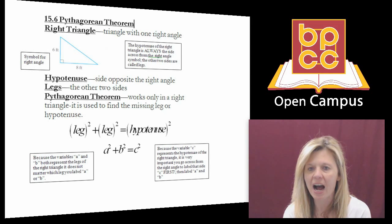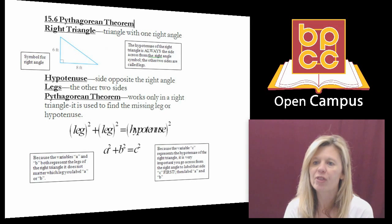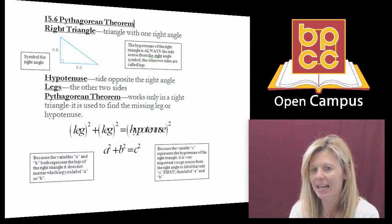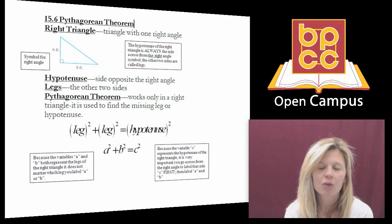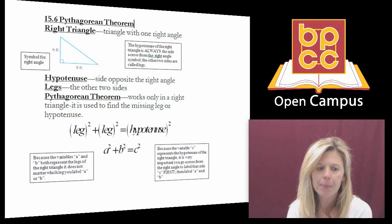the two sides that are connected, the base and the height of that right triangle that connect to the right angle, they are called legs. The other side that's slanted that is across from that right angle is called the hypotenuse. And the hypotenuse is always the longest side of a right triangle.